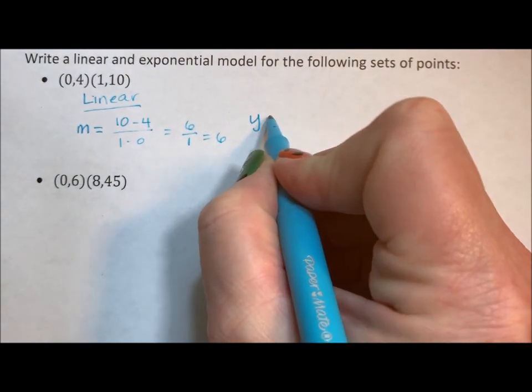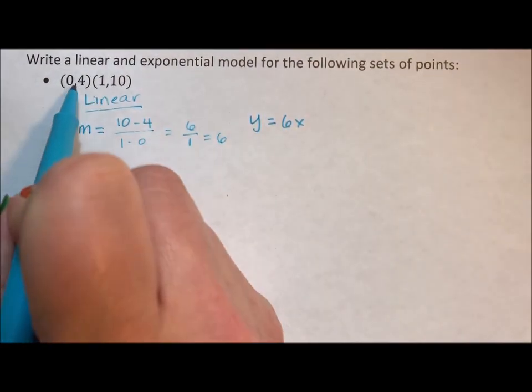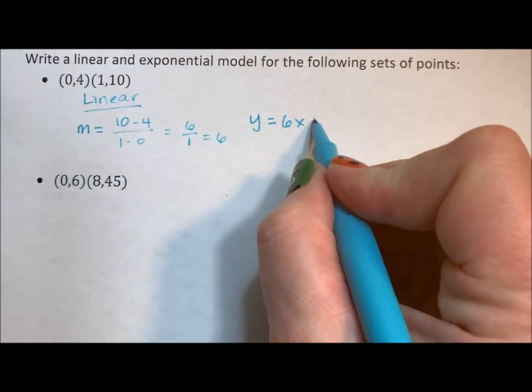So y equals 6x. Now, (0,4), that's the y-intercept, so plus 4.